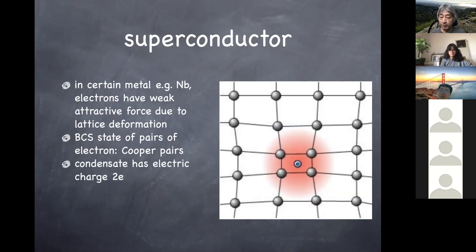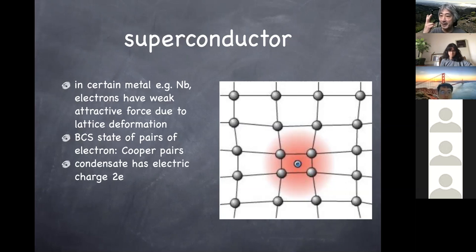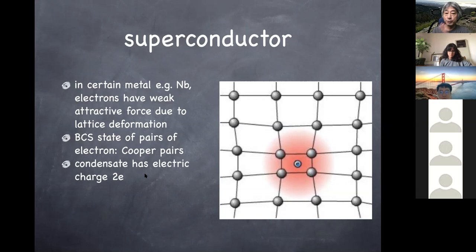Bardeen, Cooper, and Schrieffer earned the Nobel Prize for this amazing idea. Bardeen is one of very few people — possibly the only person — to earn the Nobel Prize in physics twice: once for BCS theory of superconductivity, and once for the discovery of the semiconductor transistor.